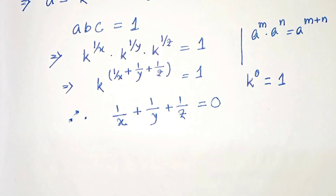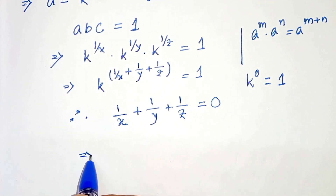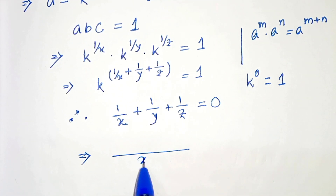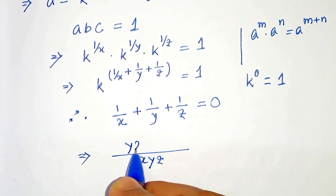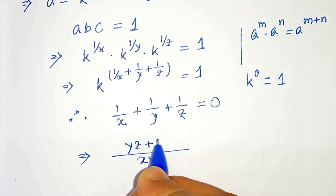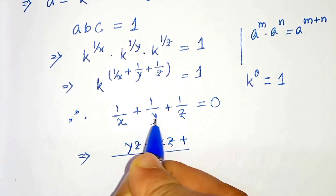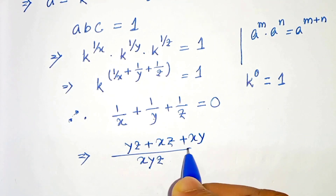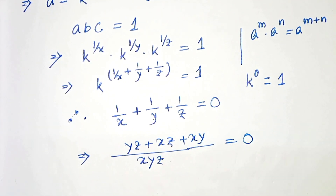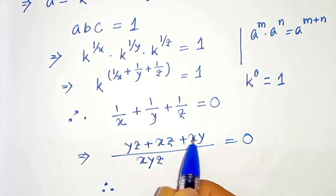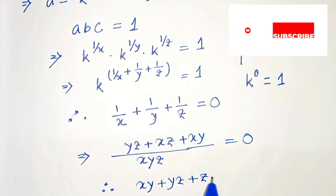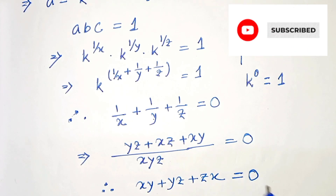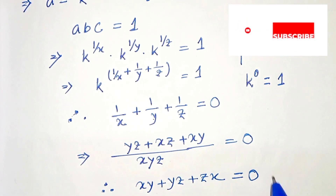From this, let's take LCM. If we take LCM, the denominator is xyz and in the numerator it will be yz plus xz plus xy, which equals 0. Therefore we get xy plus yz plus zx equals 0. This is our answer.